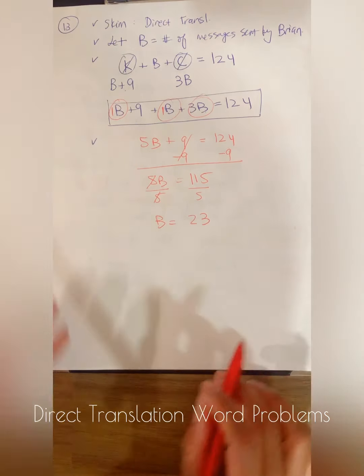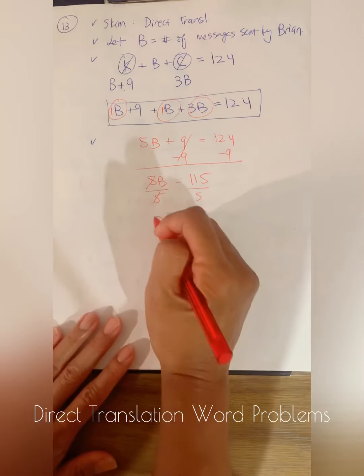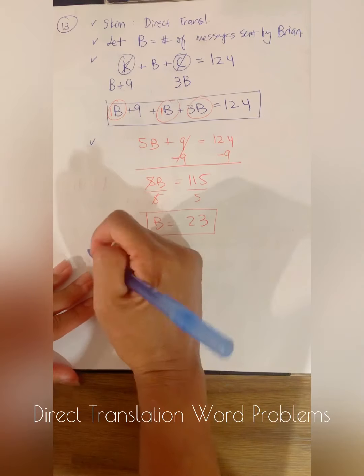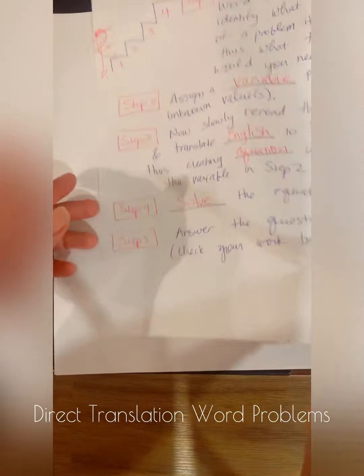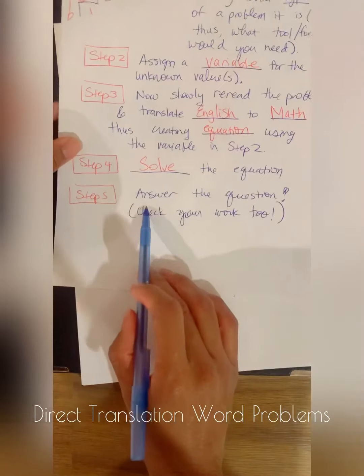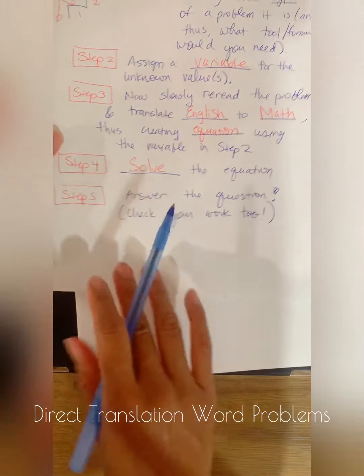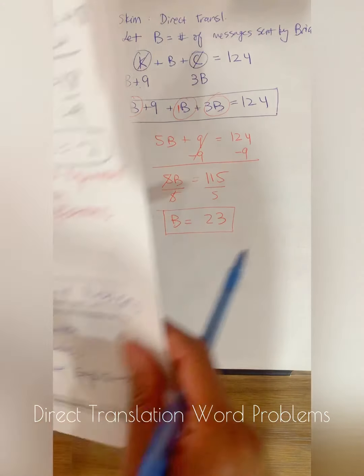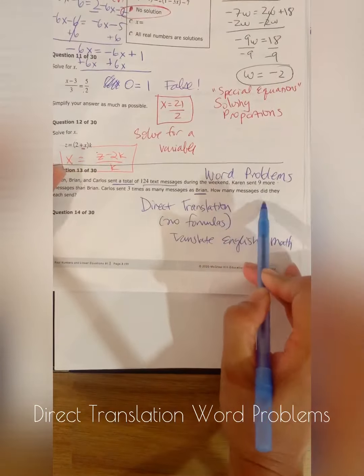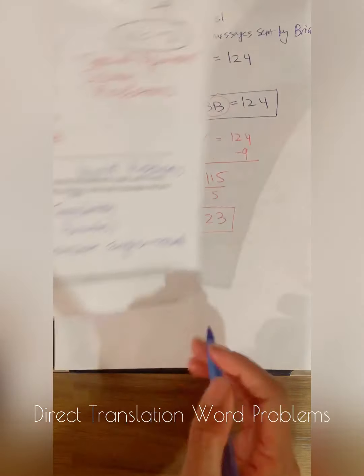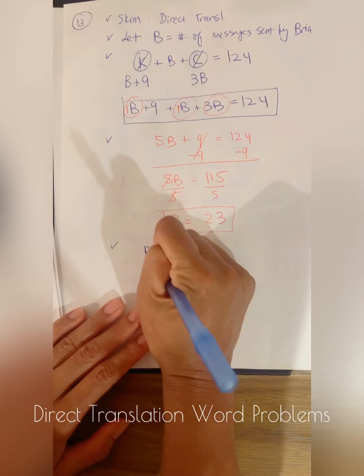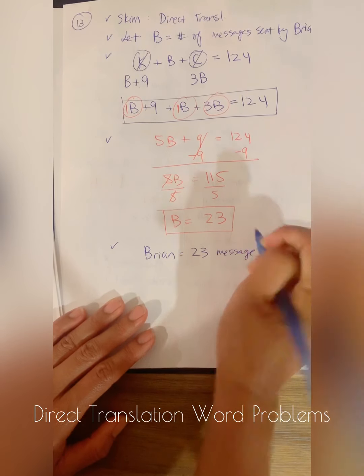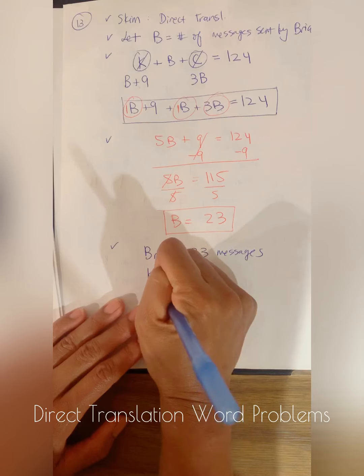Yep, 23. So here I get B is equal to 23. Well, the last step, remember, out of these steps of how to solve a word problem, the last step is to answer the question. So the answer is not B is equal to 23. Make sure you go back and read the question. How many messages did they each send? So therefore, we want to say that Brian sent 23 messages.